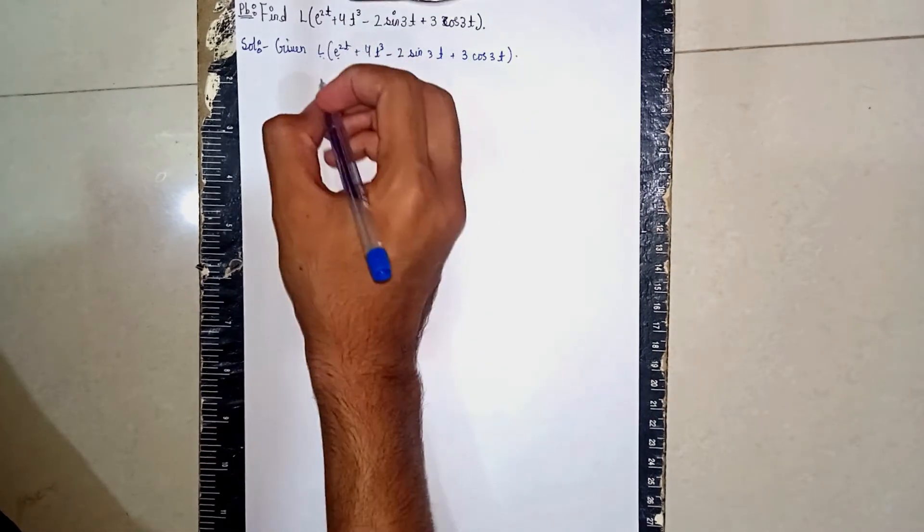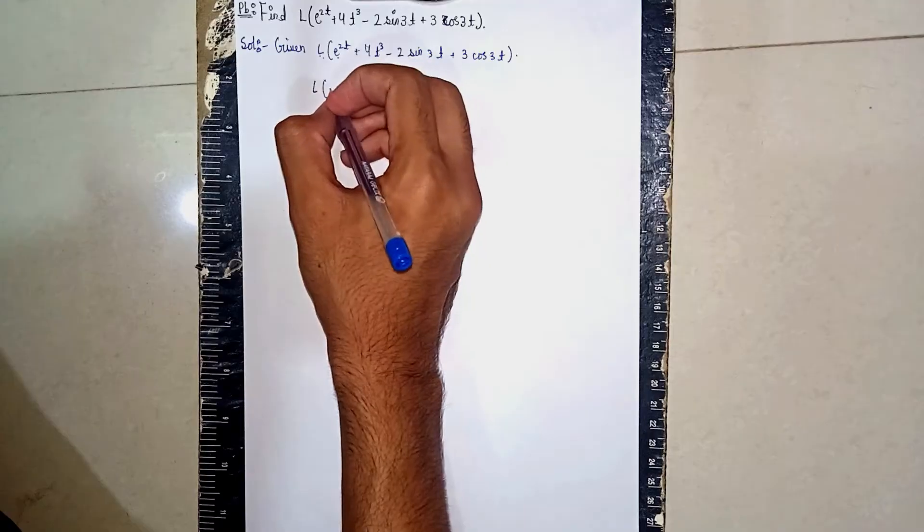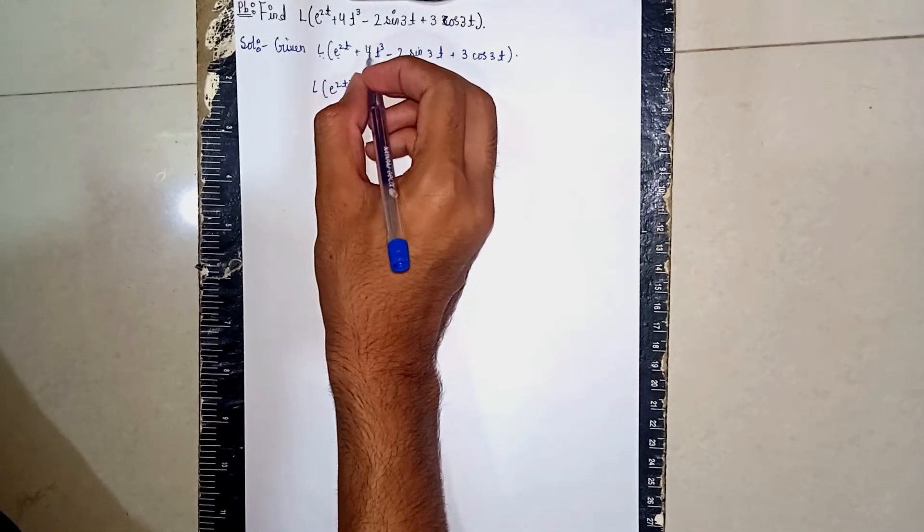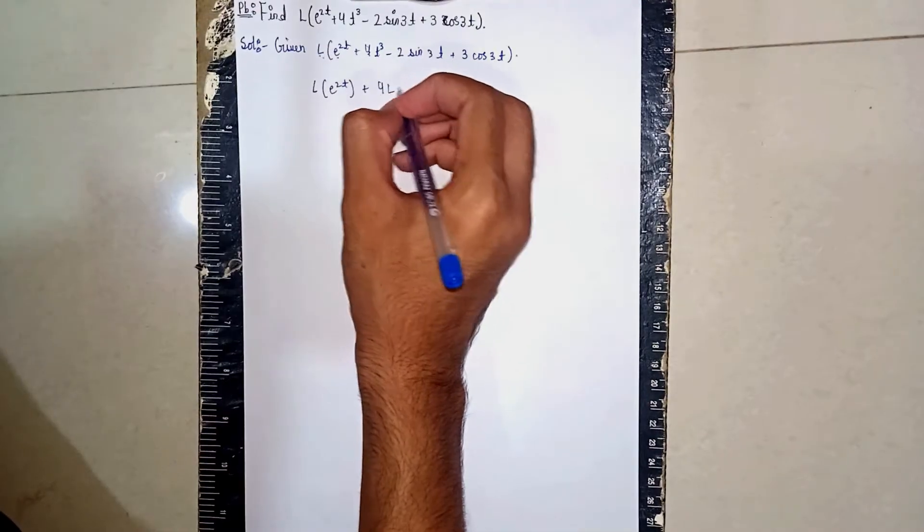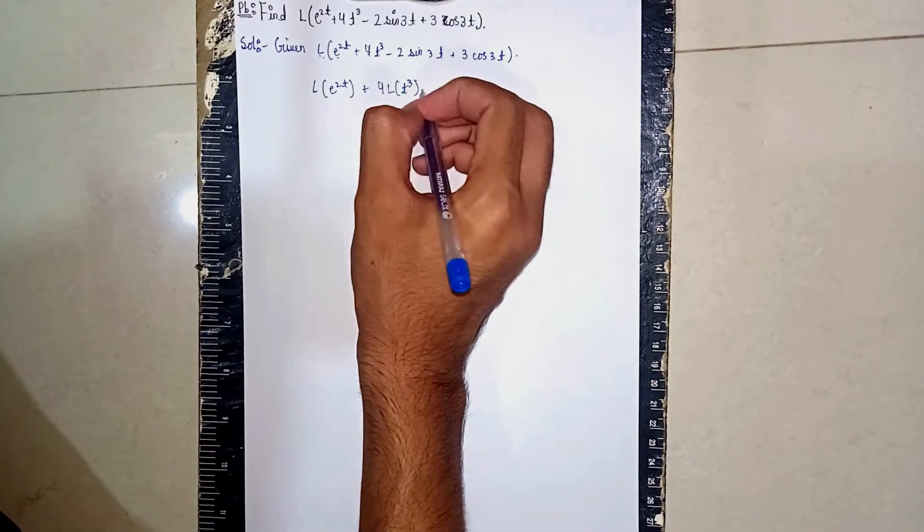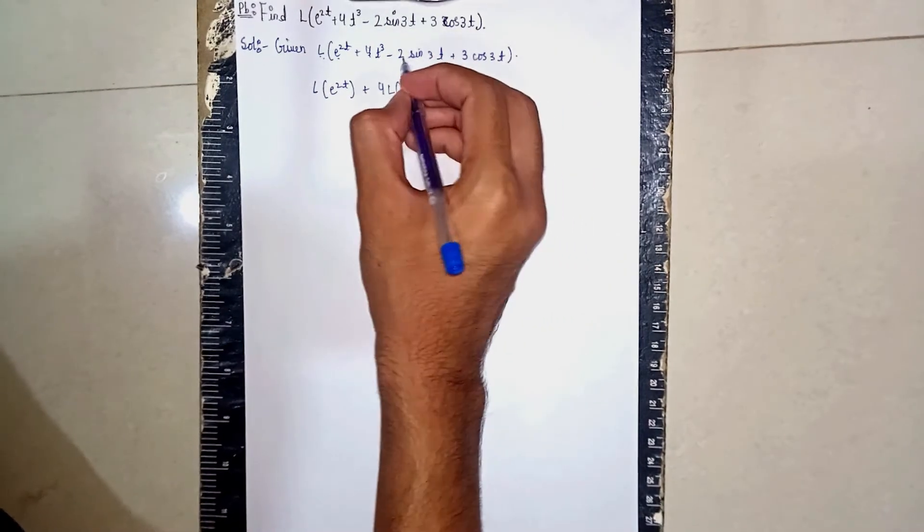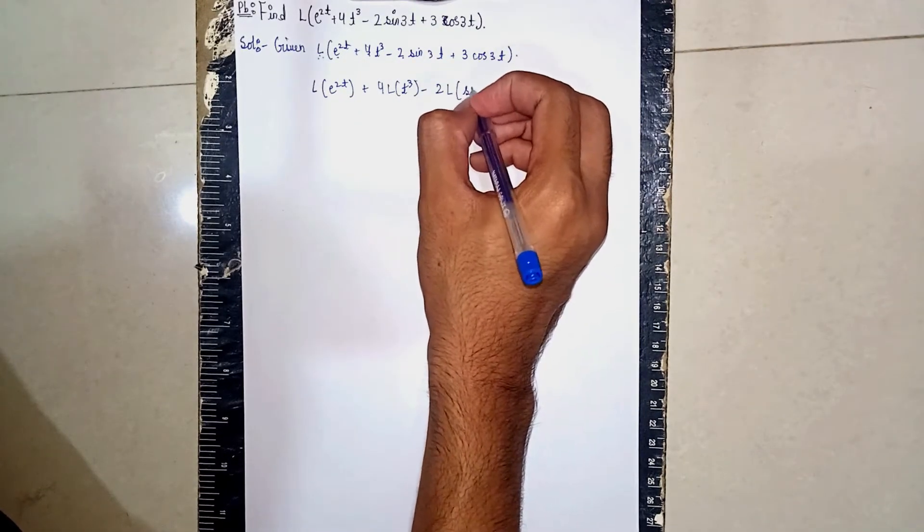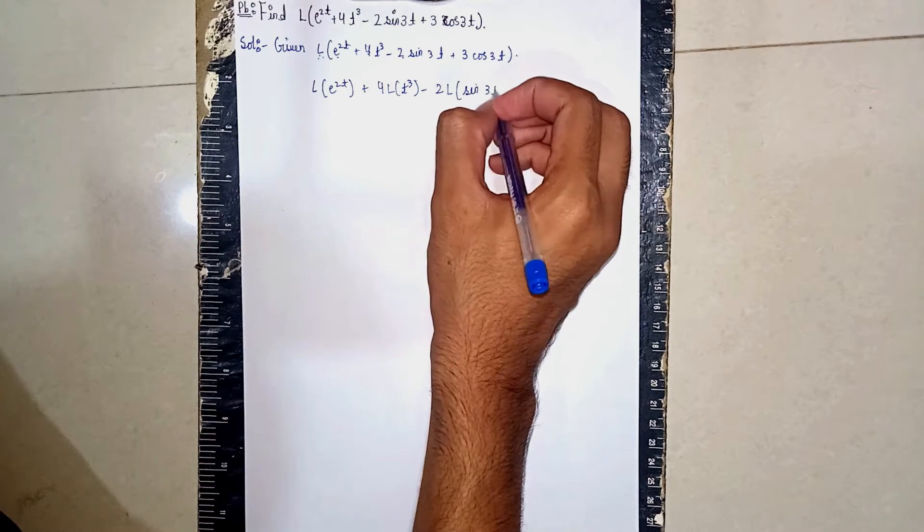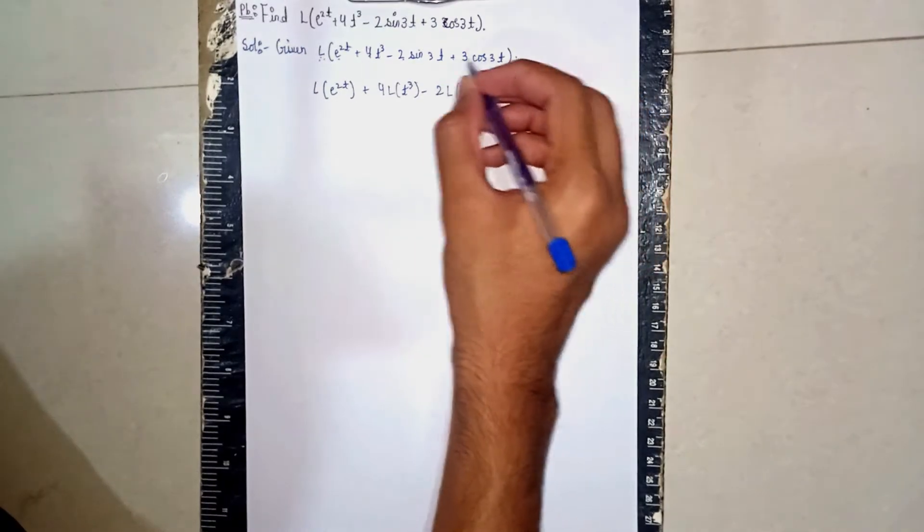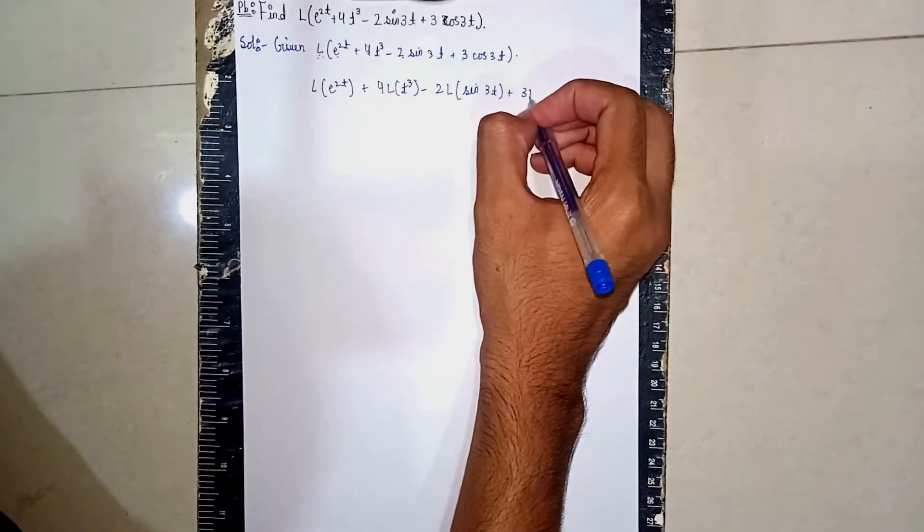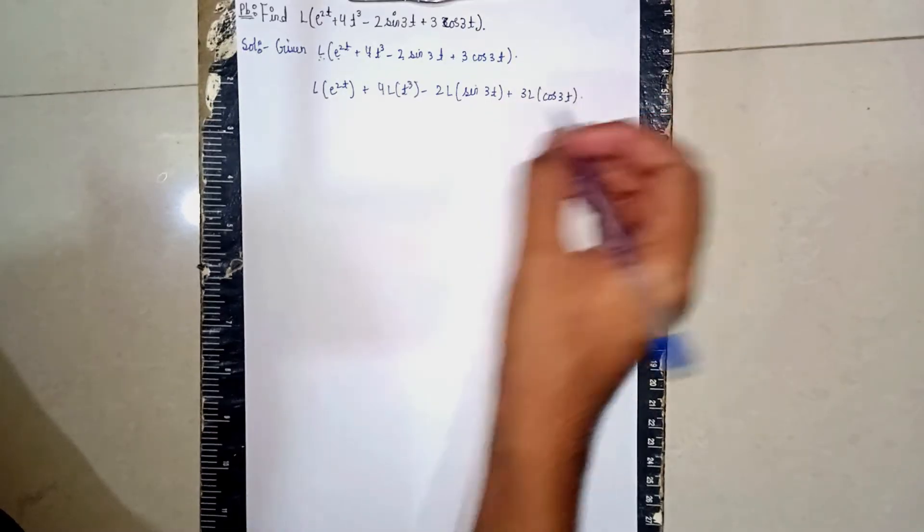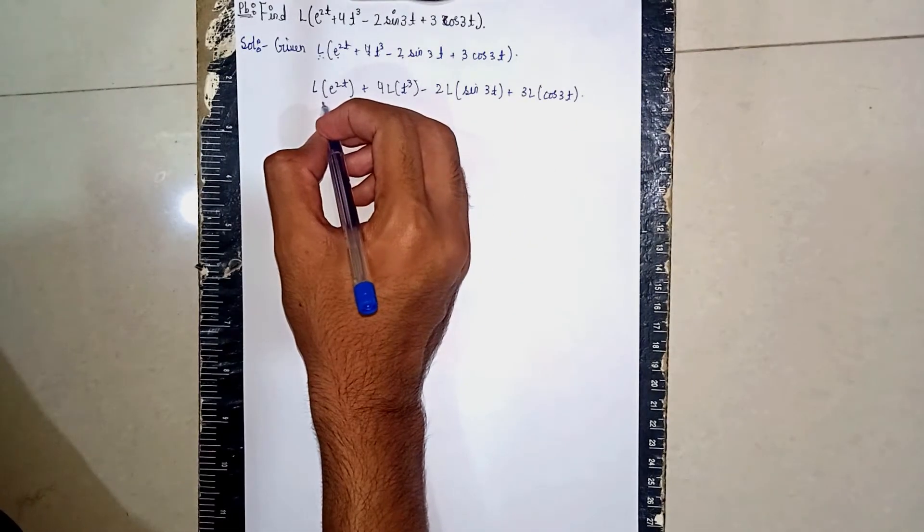It becomes L of e^(2t) plus here 4 will come outside, 4 into Laplace of t^3, minus 2 here, 2 will take outside, 2L of sin(3t), then plus here 3 outside, 3 Laplace of cos(3t). Now I'm using Laplace transformation.